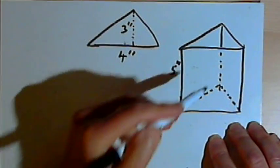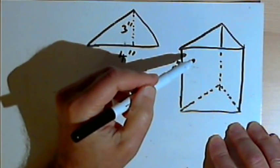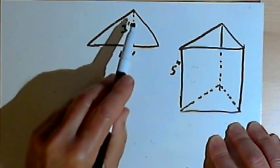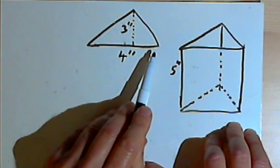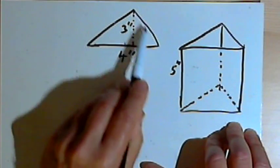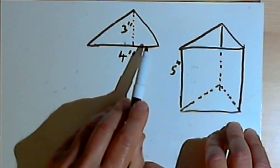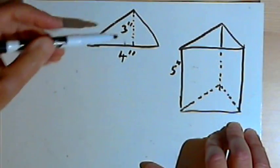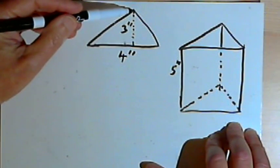I'll start out with a triangular prism. So I've drawn a triangular prism here. Its height is 5 inches. And I've also drawn a separate picture of its base. So we can see that for the triangle that forms the base, it's got one side which is 4 inches long and it's got an altitude that's 3 inches high.